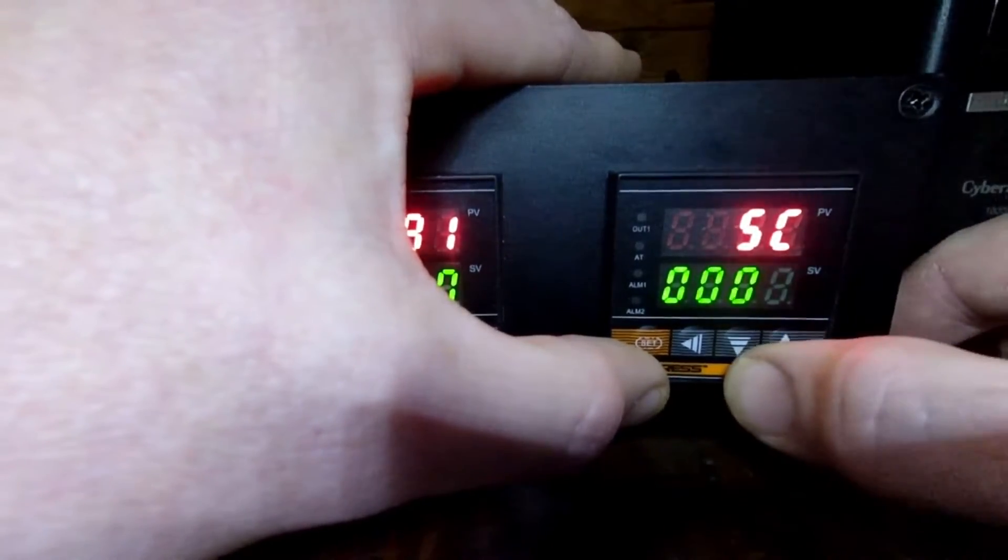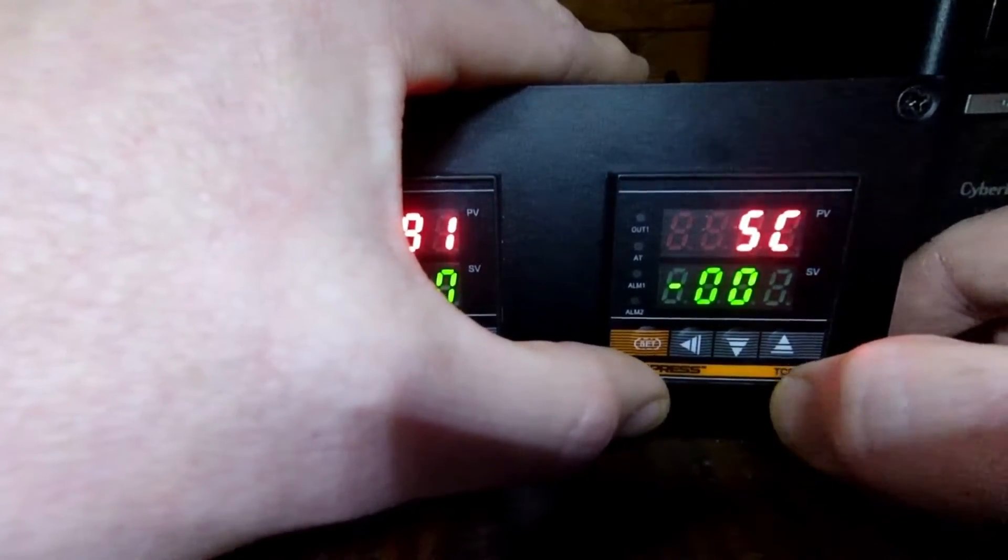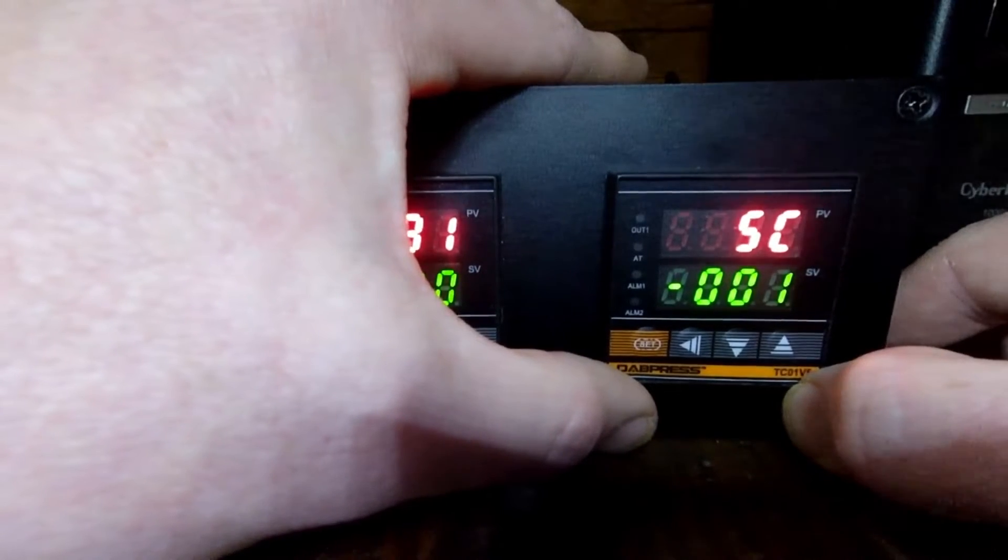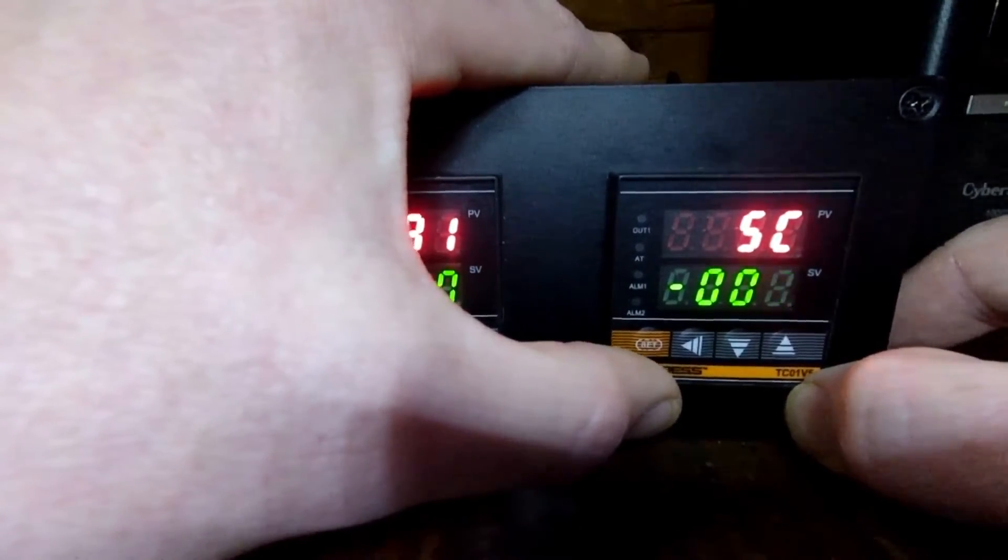So what you're going to do is hit the down button twice to compensate for those two degrees. So we changed it from 0001 to negative 001.